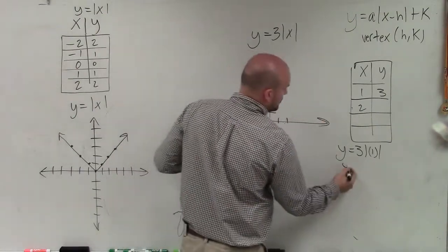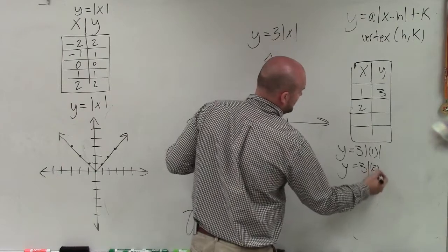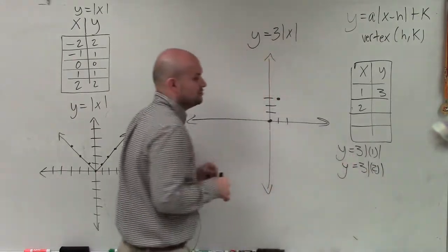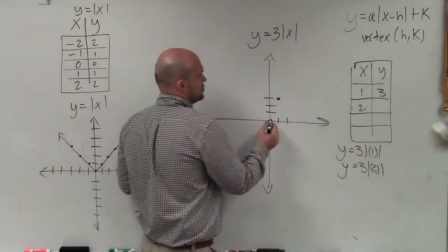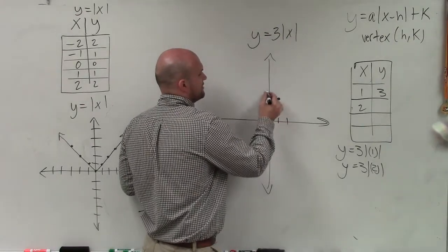When I do 2, y equals 3 times the absolute value of 2. Absolute value of 2 is 2. 2 times 3 is 6. So over 2, now I'm going to go up 1, 2, 3, 4, 5, 6.